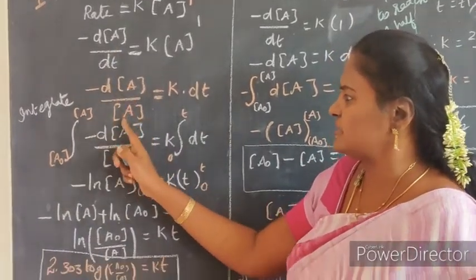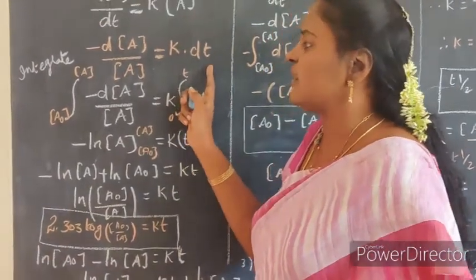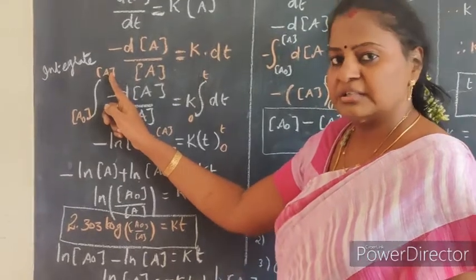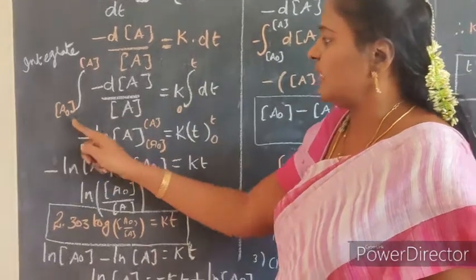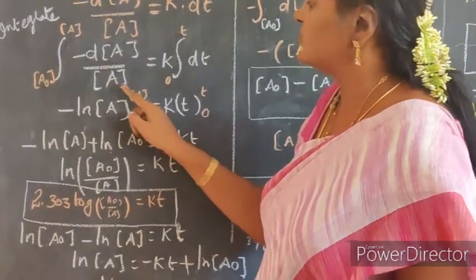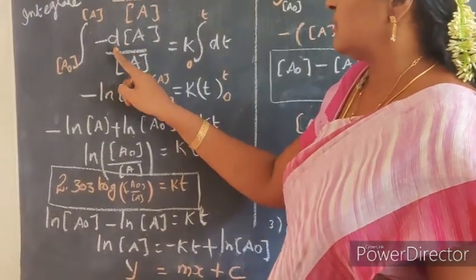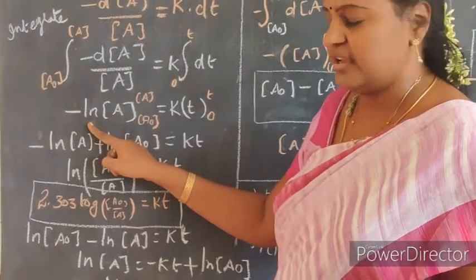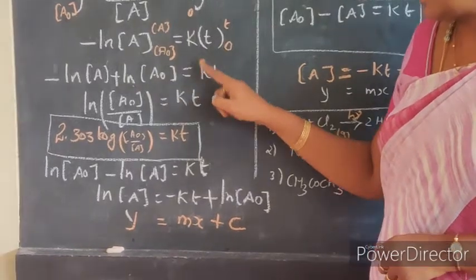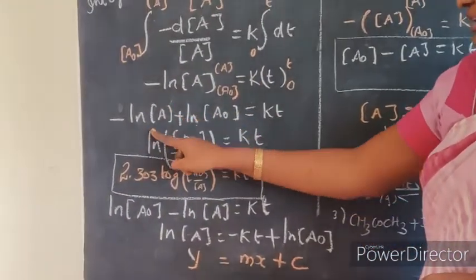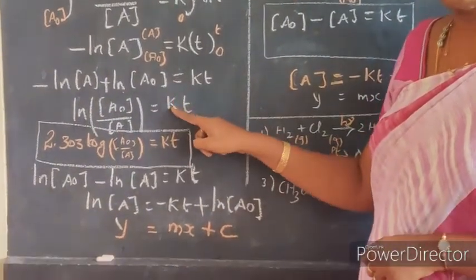Minus dA/dt is equal to K into A. Now between the limits, we are going to integrate with A₀ and A for the concentration, and 0 to T for time. Integrating from A₀ to A, we get dA/A, which is ln A. So minus ln A evaluated from A₀ to A is equal to K into T. Substituting the limits, we get ln(A₀/A) is equal to K into T.